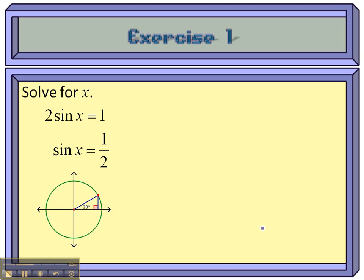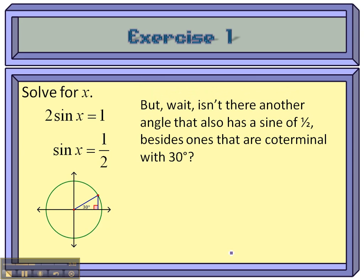However, there's another set of solutions beyond those coterminal ones, and that's another place on the unit circle that also has the same sine value of a half. That's over there in quadrant 2. That's at 150 degrees. That's just the supplement of 30, 180 minus 30.